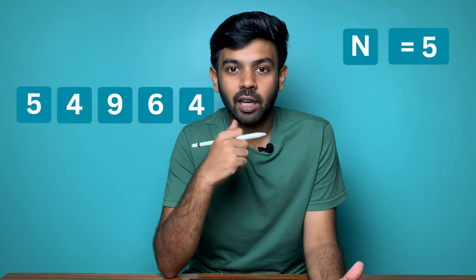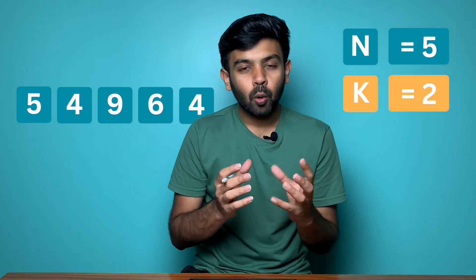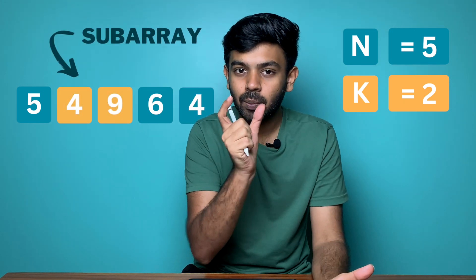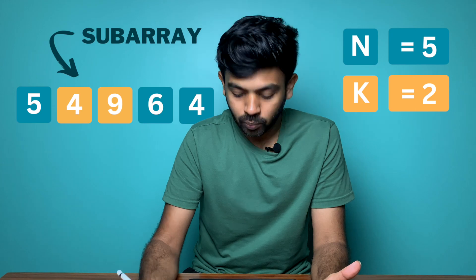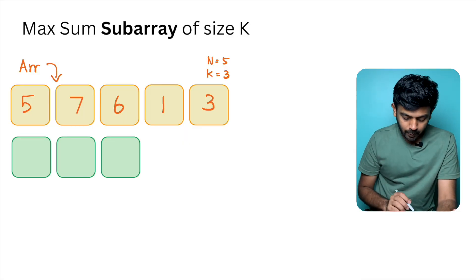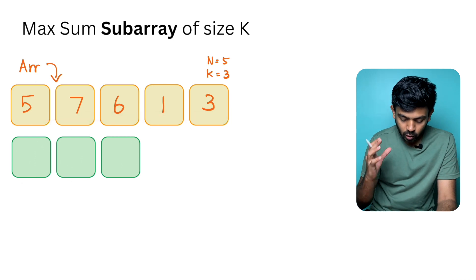What is this question? You are given an array of size n. If you consider a subarray, the subarray is of size k. We will talk about a continuous segment. For example, let's look at this example: 5, 7, 6, 1, 3 is the original array.